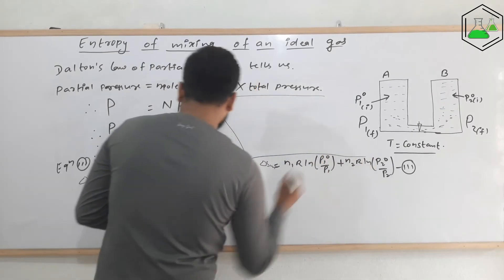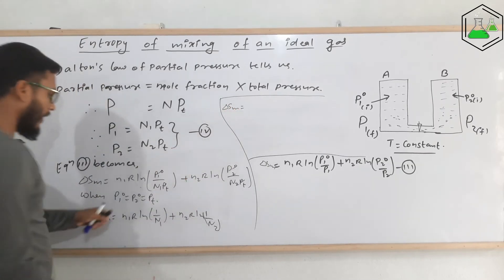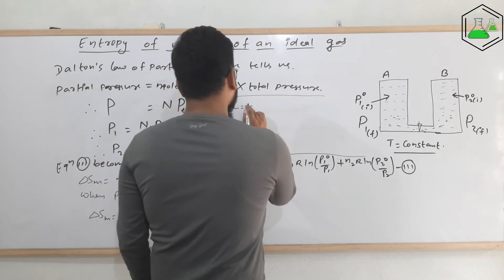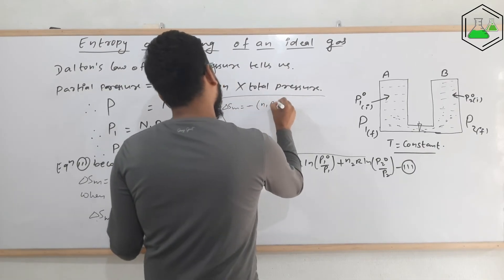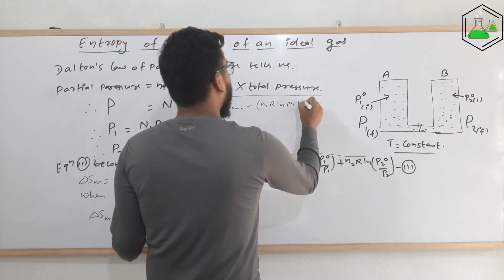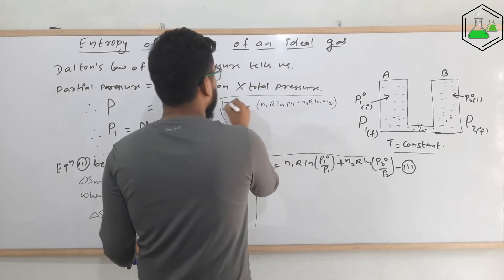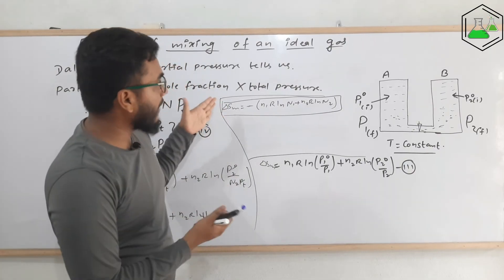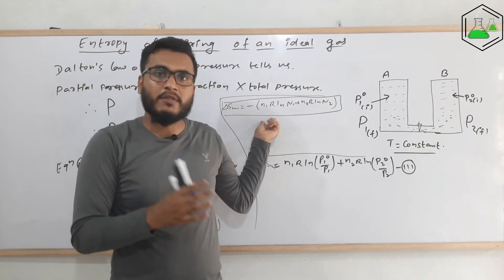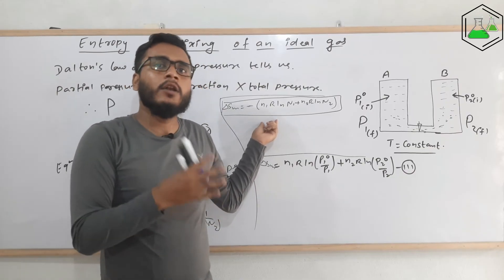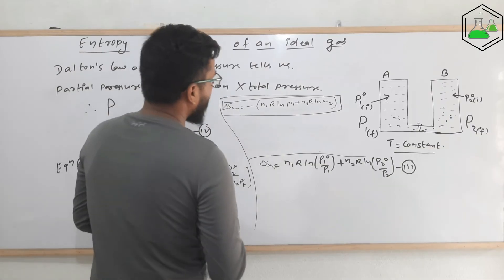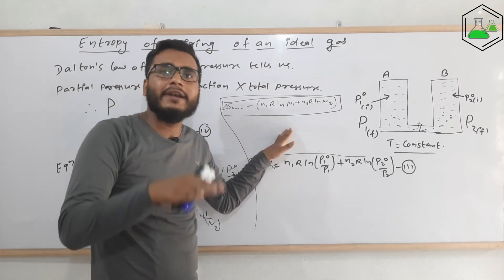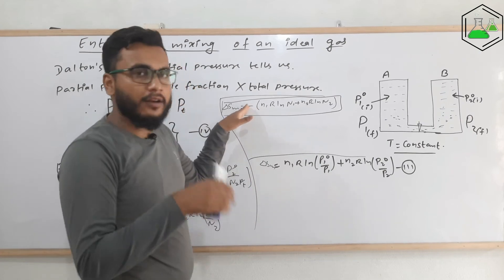This can finally be written as ΔSₘ = −[n₁·R·ln(χ₁) + n₂·R·ln(χ₂)]. This is the final mathematical expression for the entropy of mixing of ideal gases. In an examination, if asked to derive the formula, we need to derive this equation. You might wonder — since there is a minus sign, does entropy decrease? No, that is wrong.